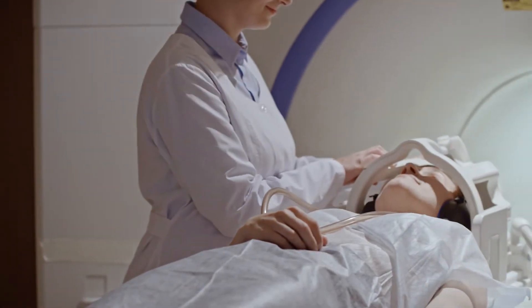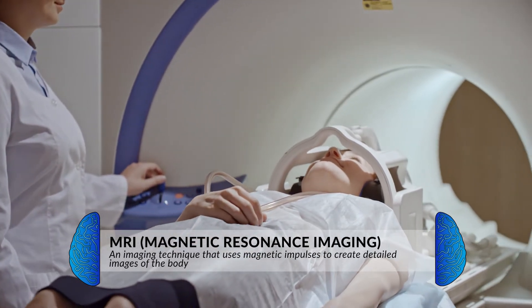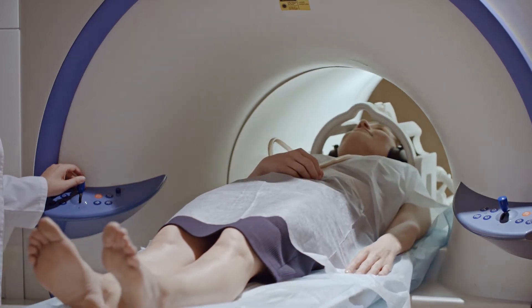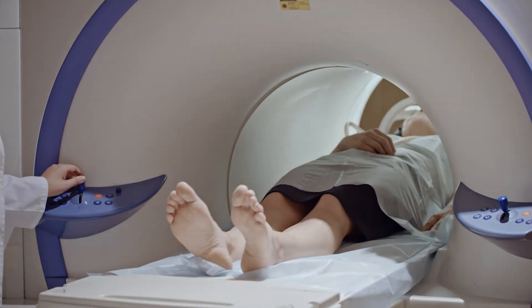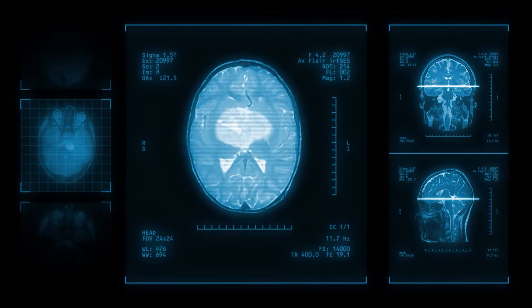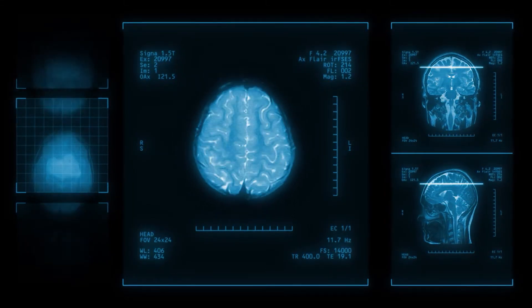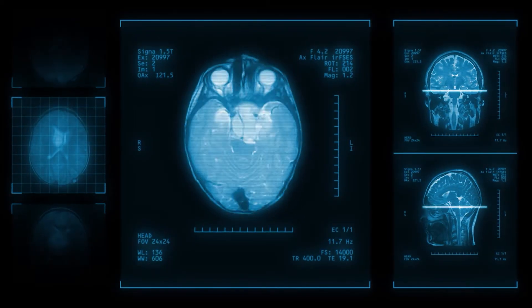Another tool used to understand brain structures is an MRI, which stands for magnetic resonance imaging. This provides a detailed picture of the brain by using a strong magnetic field to cause molecules to vibrate at different frequencies. An MRI takes many still pictures of slices of the brain and can turn those images into a movie. This modality does not involve radiation; however, due to the magnetic field, it cannot be used on patients with metal implants, and individuals must remain still in a small confined area for an extended period of time.